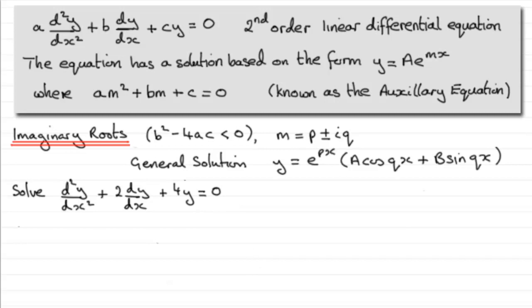Okay, welcome back if you had a go. So first of all what I'd want to do is set up the auxiliary equation. So we just write that in, auxiliary equation. And that auxiliary equation for this example is going to be m squared plus 2m and then plus 4 equals 0.